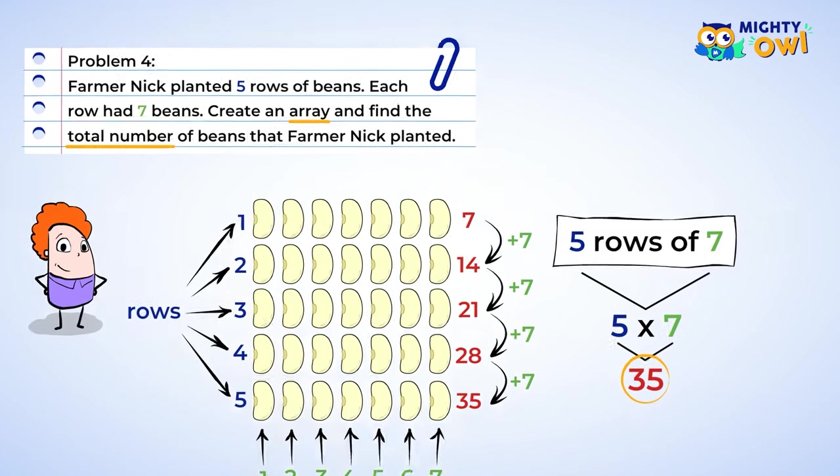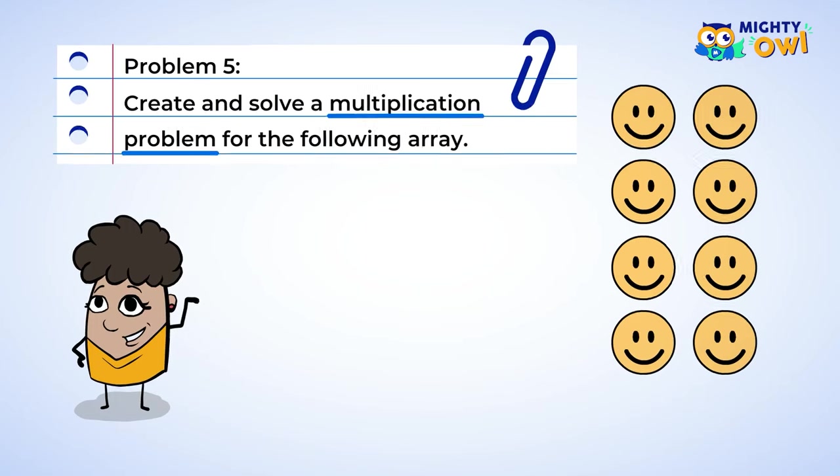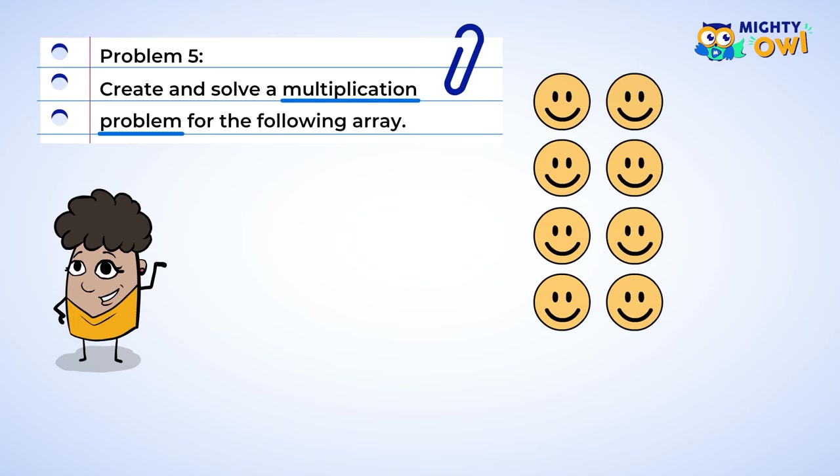Let's do just one more. All right. In order to create and solve a multiplication problem with this array, we need to first find out how many rows and columns there are. First, we can count the rows. There are four rows.